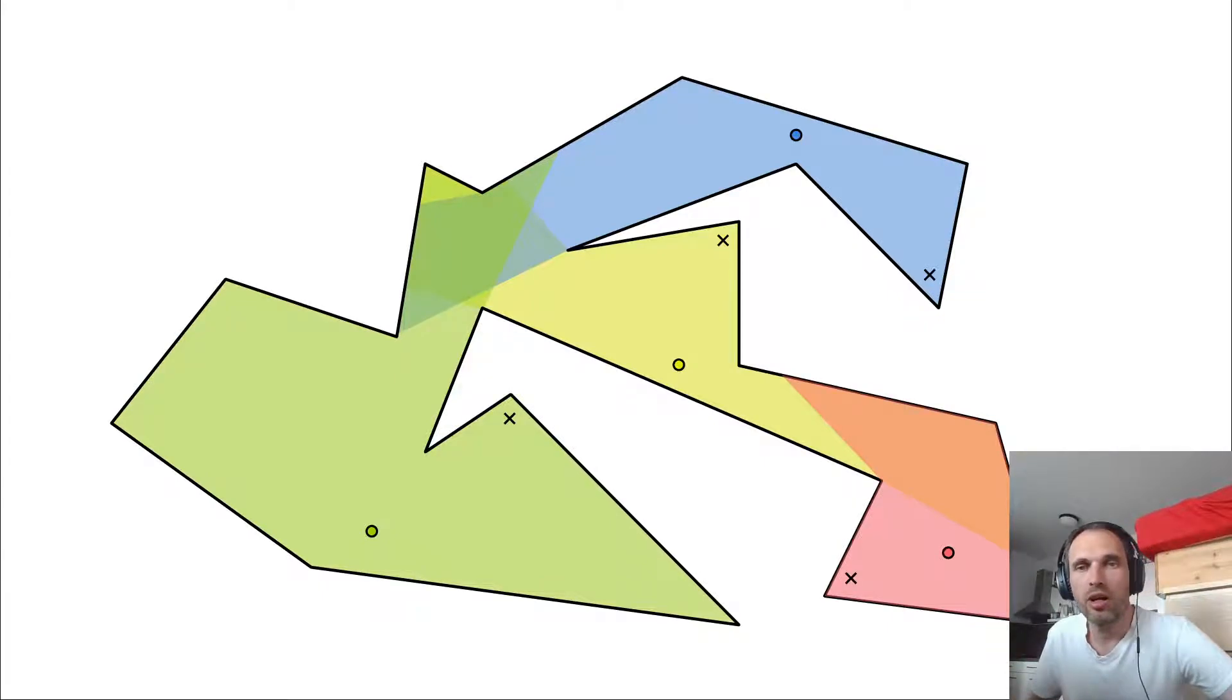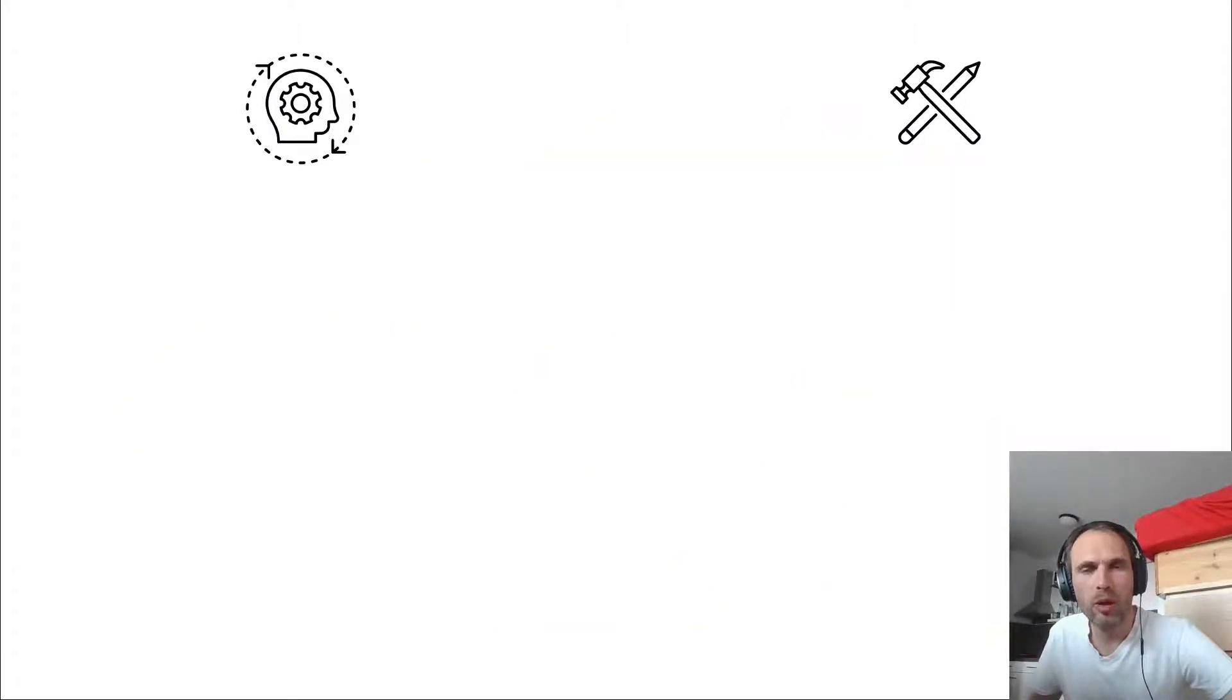This is an optimal guarding for that polygon. And that's what we're looking for. Okay. And let me do a little bit of a literature recap on the art gallery problem.